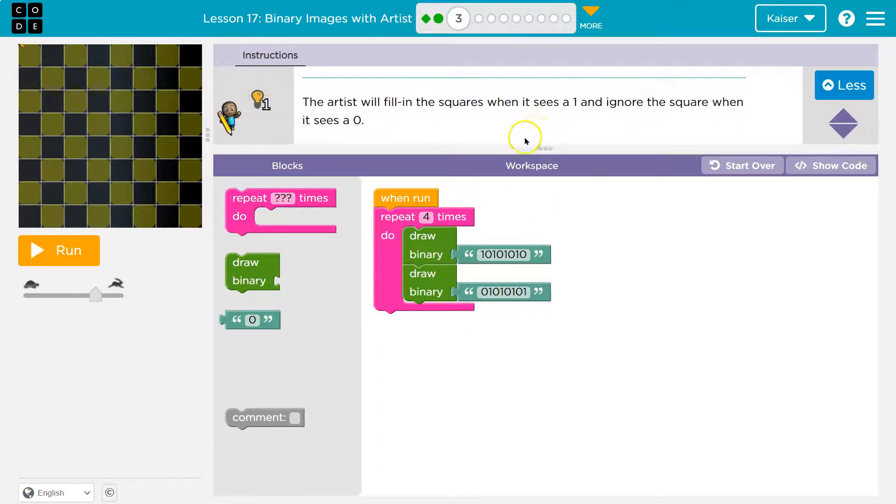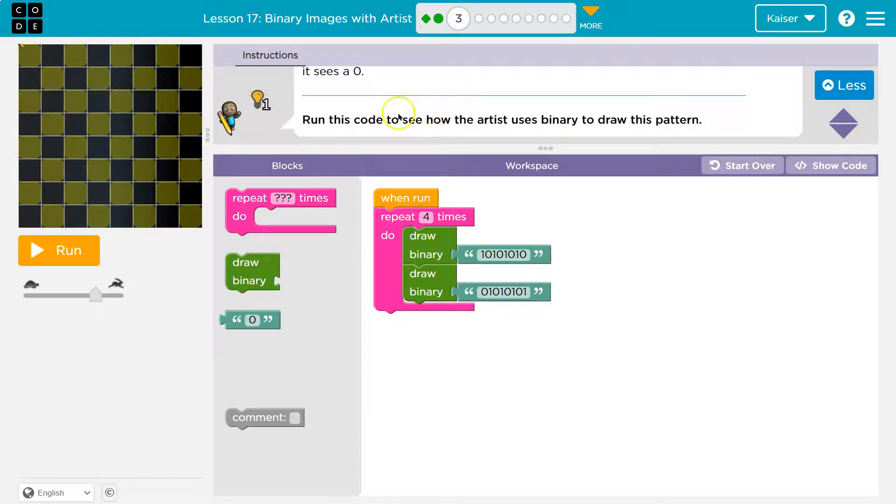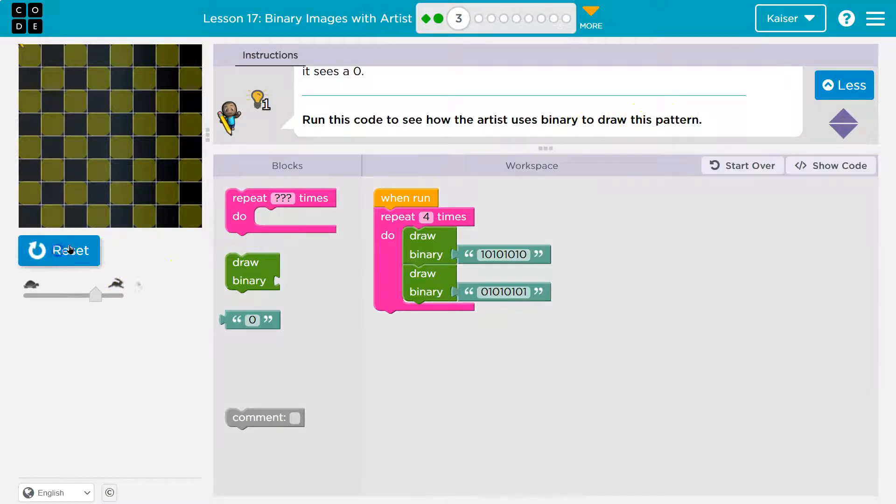The artist will fill in the squares when it sees a one and ignore squares when it sees a zero. Run the code to see how the artist uses binary to draw patterns. Notice we can also control the speed here.